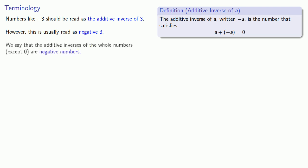We say that the additive inverses of the whole numbers with the exception of 0 are called negative numbers, and that means we also want to give a special name for the whole numbers, again except for 0, which are going to be the positive numbers. 0 itself is not considered positive and is not considered negative.